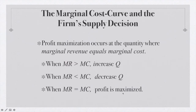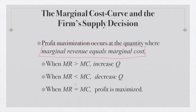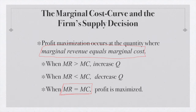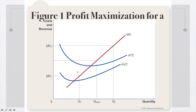So how does a competitive firm maximize its profit? Ultimately, the competitive firm is going to maximize its profit by producing where marginal revenue equals marginal cost. This is called the profit maximizing rule. When MR equals MC, profits are maximized. If marginal revenue is greater than marginal cost, the firm would want to produce more. If marginal revenue is less than marginal cost, you actually want to produce less to increase your profit.